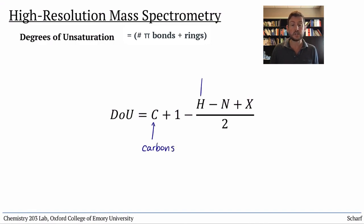Where C, H, and N are the number of those atoms in the formula and X is the number of halogens: fluorine, chlorine, bromine, or iodine in the formula. There are many equivalent ways to write this mathematical formula, so don't be confused if you see another version in a book or online.